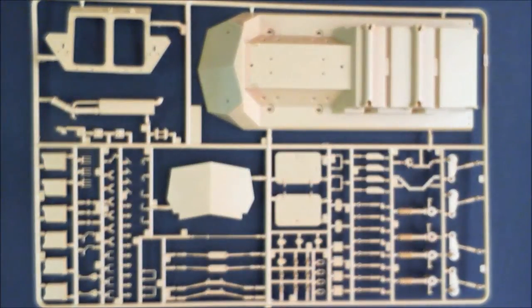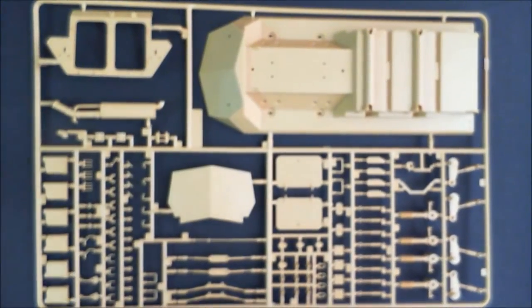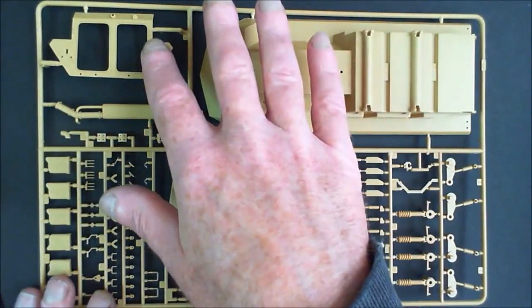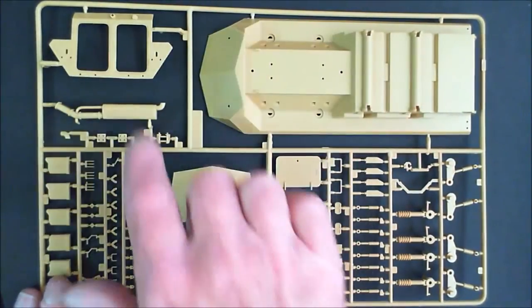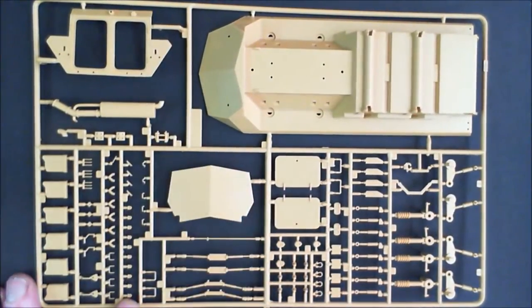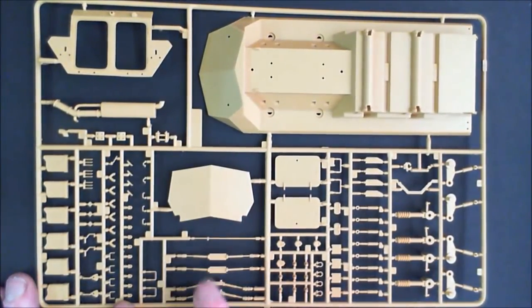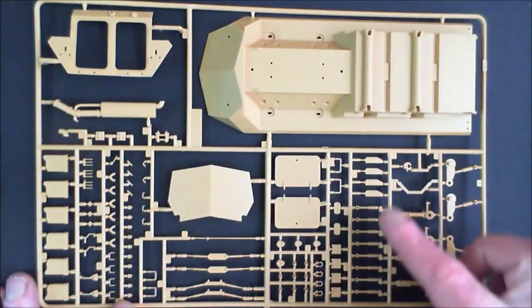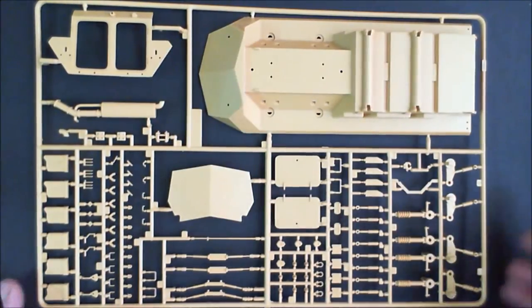We'll start off with sprue A. On sprue A we get the lower hull, back doors, plate, exhaust, some jerry cans, the lids for the jerry cans, some suspension parts, more suspension parts, two hatches, and more suspension. So that's about it.